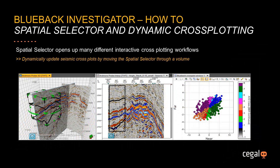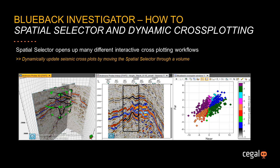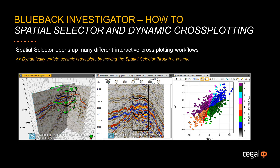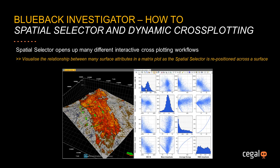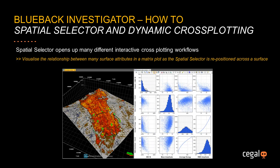Spatial Selector also gives you the ability to dynamically update cross-plots in data analysis windows based on the position of the spatial selector. In this example, we can see the cross-plots updating as the selector is moved through the seismic volume. The same workflow is illustrated here, moving a spatial selector across a surface attribute whilst visualising the relationship between many attributes in a matrix plot window.